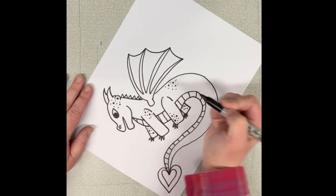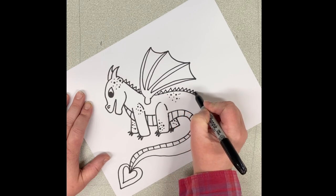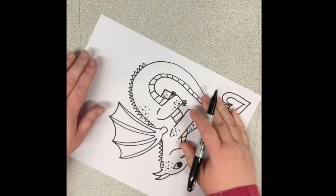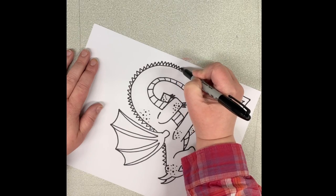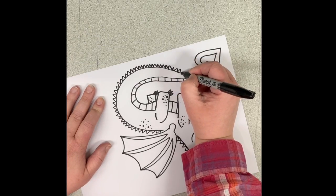So the last step here that I had forgotten about was to add some spikes going down his back. So to make it a little easier, I turned my page as I was drawing them. And it makes it a little easier to keep that shape.